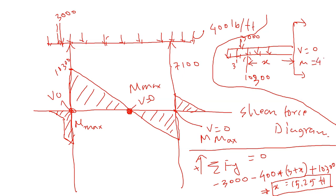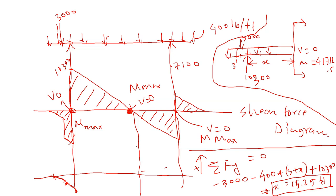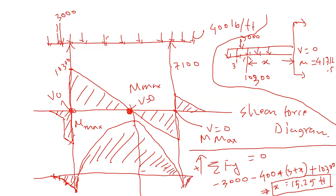Drawing the bending moment diagram: at point D, the moment is negative 800 pound-feet; it follows a second-degree curve, going to negative 4800 pound-feet at A, then rising to a maximum of 41,712.5 pound-feet at x equals 15.25 feet, then dropping back negative at B to negative 800 pound-feet, and returning to zero at the right end. That is the complete bending moment diagram for this problem.